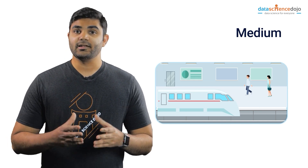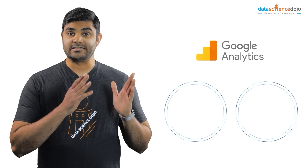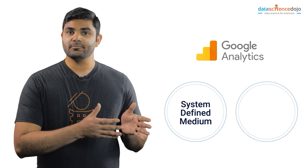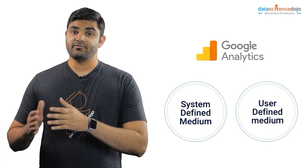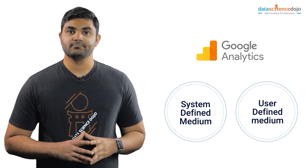In Google Analytics, mediums are of two different types. One is a system-defined medium, and the other is a user-defined medium.